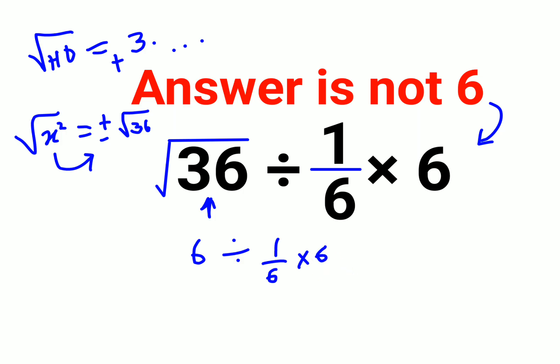Now please understand the very important thing is division and multiplication always have equal precedence. So what you have to do in questions like this you just go from left to right.